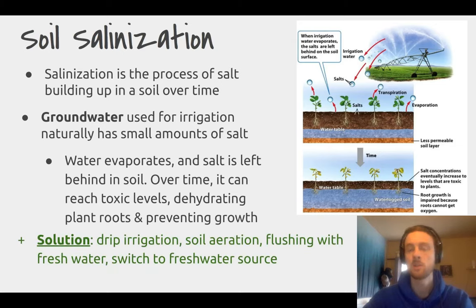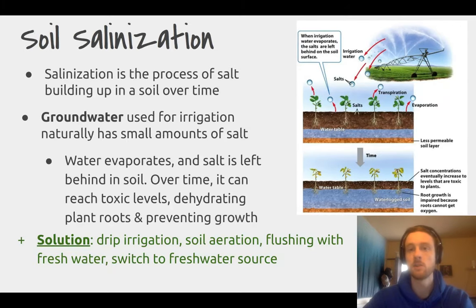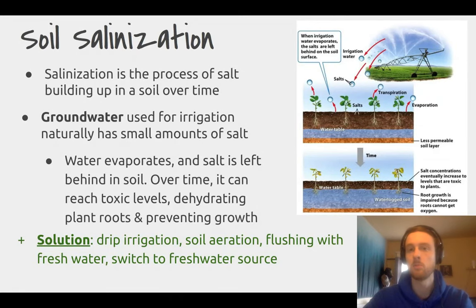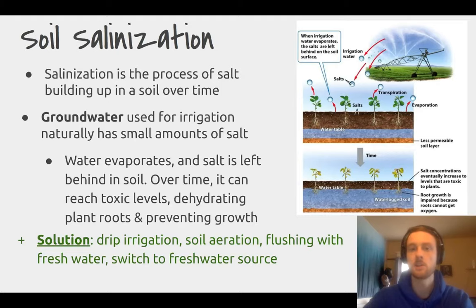Solutions to salinization include drip irrigation, since you minimize your water input. A really great solution is switching to a freshwater source — using lakes or streams that are freshwater instead of groundwater. You could also aerate your soil, which allows water to drain through and carry the salt deeper into the soil where it won't harm the roots. You can even flood or rinse out your soil by adding a bunch of fresh water, allowing it to run off and carry a lot of the salt out, then start over again with fresh water.